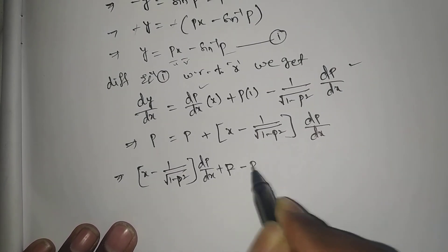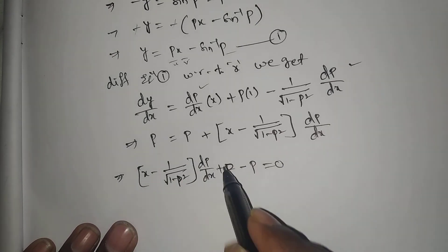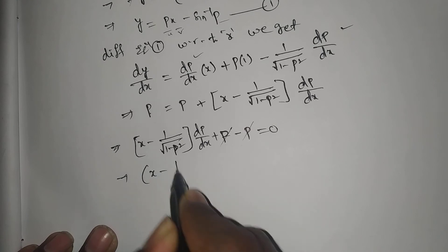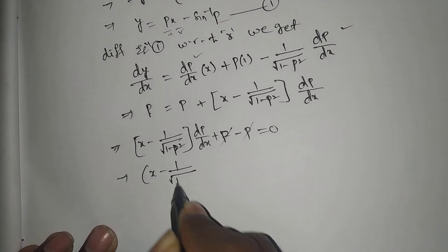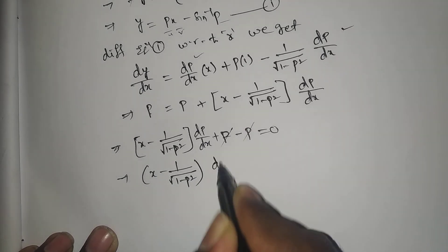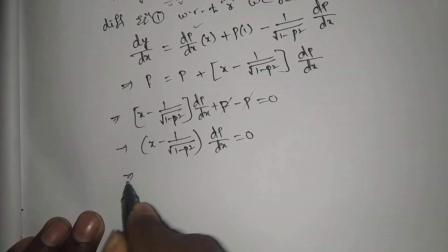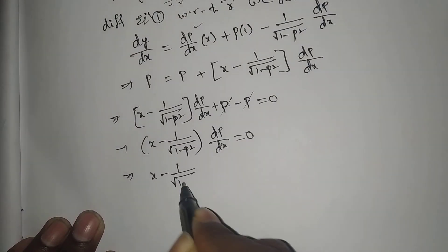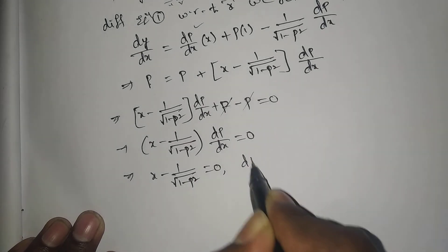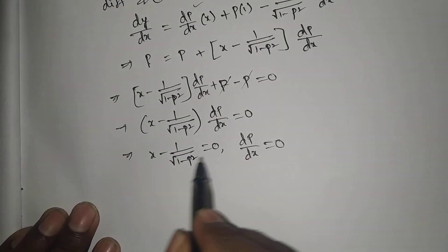So we have p minus p = 0. That implies x minus 1 over root of (1 minus p squared) times dp/dx = 0. Either dp/dx = 0, or x minus 1 over root of (1 minus p squared) = 0.